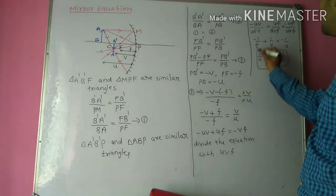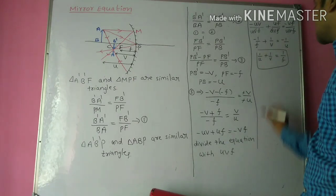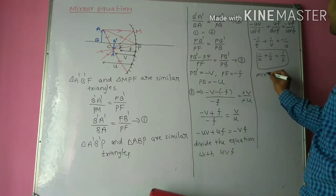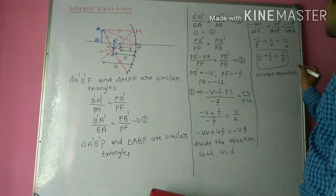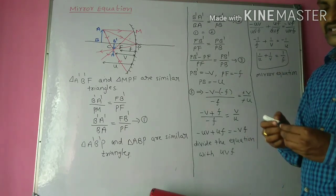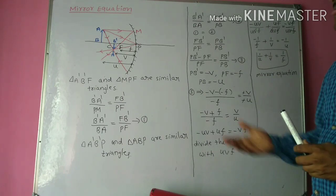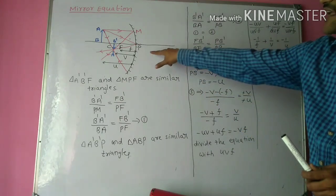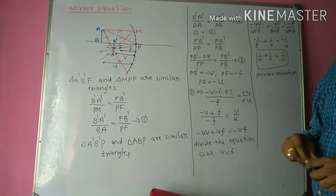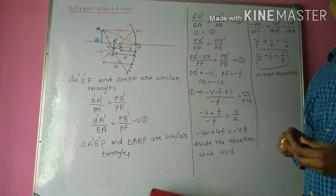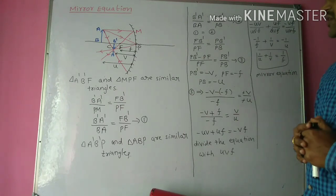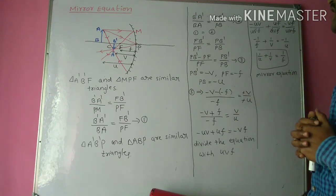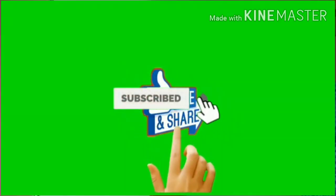This is the mirror equation: 1/u + 1/v = 1/f. This equation can be applied to any mirror — concave or convex. We derived it using a concave mirror, but the same derivation can be done with a convex mirror. If you have any doubts, ask in the comment section. Subscribe and click the bell icon for latest updates. Thank you.